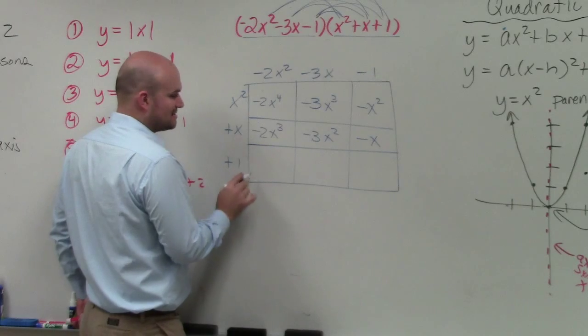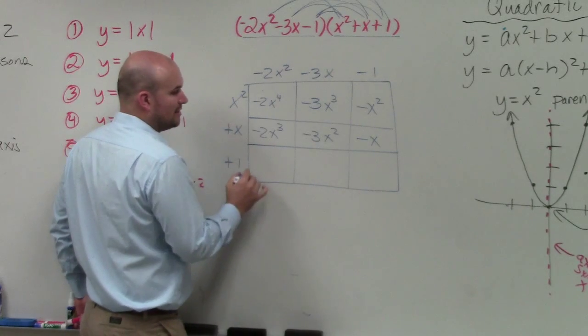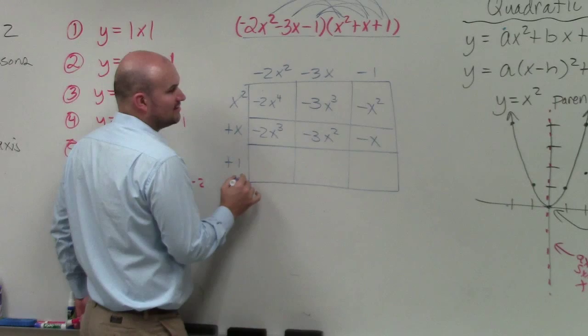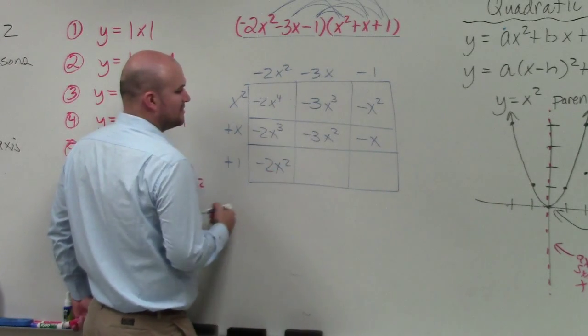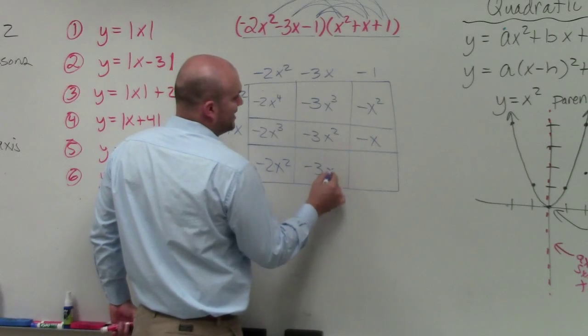Then I go to the next box, the next row. These boxes all have a length of 1 or a width of 1. Well, guess what? It's just going to be 1 times negative 2x squared is negative 2x squared, negative 3x and negative 1.